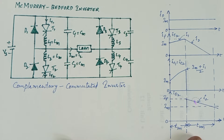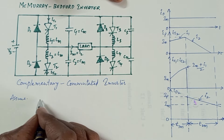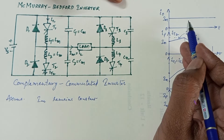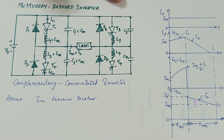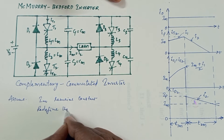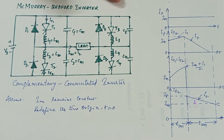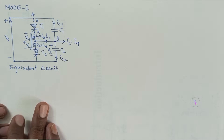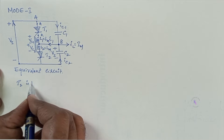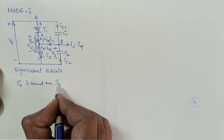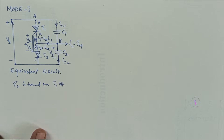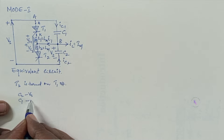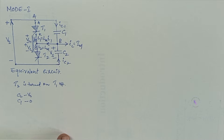The circuit operation can be divided into three modes. Assume the load current IM remains constant. In the following analysis, we redefine the time origin t equals 0 at the beginning of each mode. This is the equivalent circuit for Mode 1. This mode begins when T2 is turned on and T1 turns off. At the start of this mode, the capacitor C2 is charged to Vs, whereas C1 is at 0 volts as it is shorted by thyristor T1.